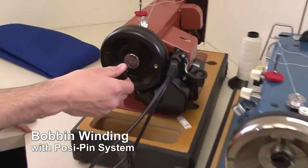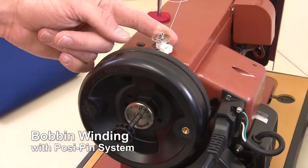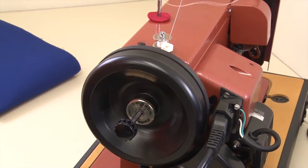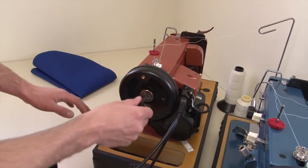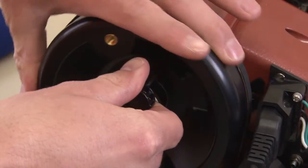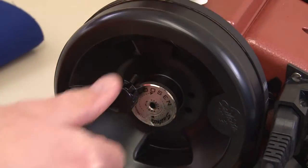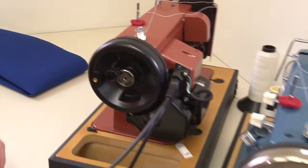Let's first demonstrate how bobbin winding works with the posi-pin. Remove the posi-pin from the balance wheel, stick it in the keeper, push the bobbin over and you're ready to wind bobbins. When the bobbin's full, just push the posi-pin back into the balance wheel, find the hole in the shaft and you're ready to sew again.